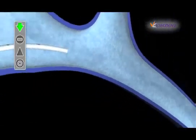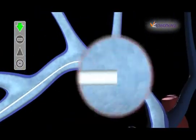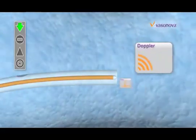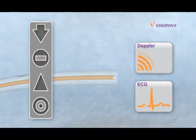Inside the Vasonova VPS stylet is a unique combination of intravascular Doppler ultrasound and ECG signal sensing that captures and measures real-time internal physiological parameters. The data is transmitted to a console where visual indicators guide the clinician as the catheter is advanced through the vasculature.